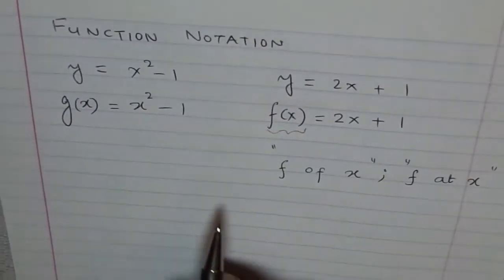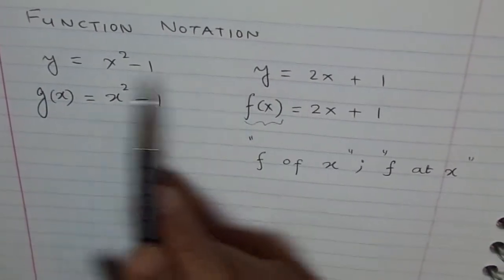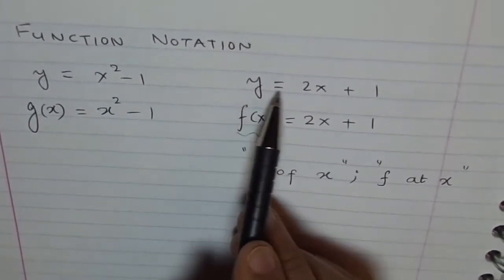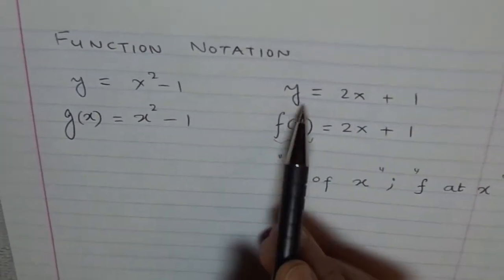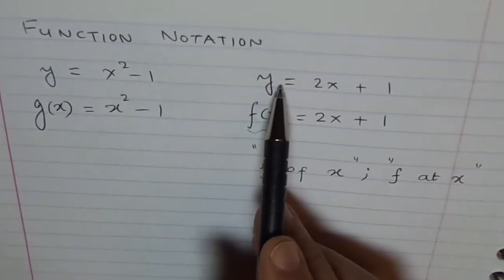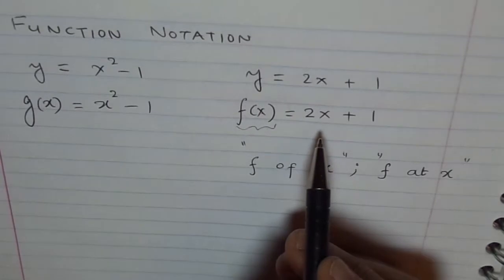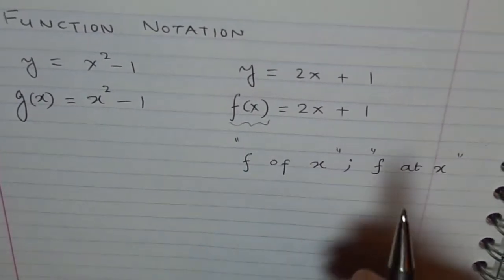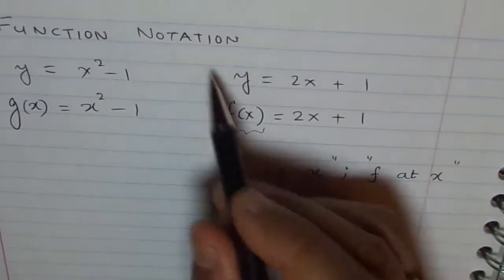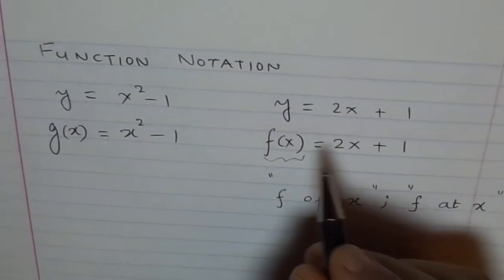You can appreciate the beauty of function notation here. Earlier, in a system, if we have two equations like this, y equals x squared minus 1 and y equals 2x plus 1, at times, you can get confused as which equation we are talking about. Giving it a name gives it an identity and makes things much better and clear. So, working in multiple equations, function notation is extremely helpful.